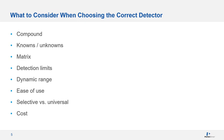In the first step of detector selection, there are items we need to consider when choosing the correct detector, such as sample type, matrix of sample, known or unknown targets, detection limits, dynamic range, ease of use, selective versus universal, and cost. These are some important factors we should know before picking any detector, and in this talk we will discuss some of these items.